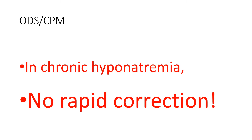Chronic hyponatremia will have gained some level of adaptation, and when we correct too rapidly beyond 4 to 6 milliequivalents per liter per day of sodium, we will put the patient into big trouble — that is osmotic demyelination syndrome. You can follow along to know everything about ODS including clinical features, how to make the diagnosis, and the preventive measure of no rapid correction of hyponatremia, particularly chronic hyponatremia.